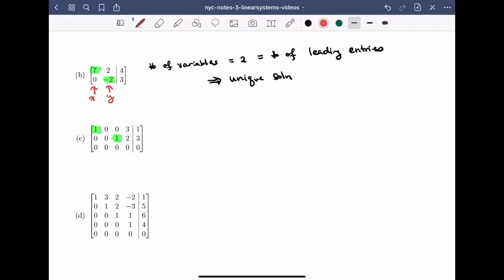In this case, how many variables do I have? Well, I have x1 for the first column, x2, x3, and x4. So the number of variables is equal to 4.